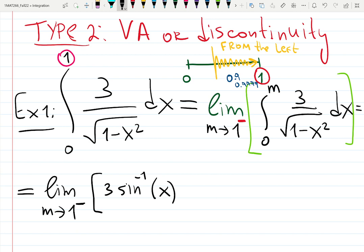It's 3 arc sine of x. And then there will be a bar, 0 and m. I want to skip this step. So I'm going to plug m right away. Top minus the bottom. 3 arc sine m minus 3 arc sine 0.